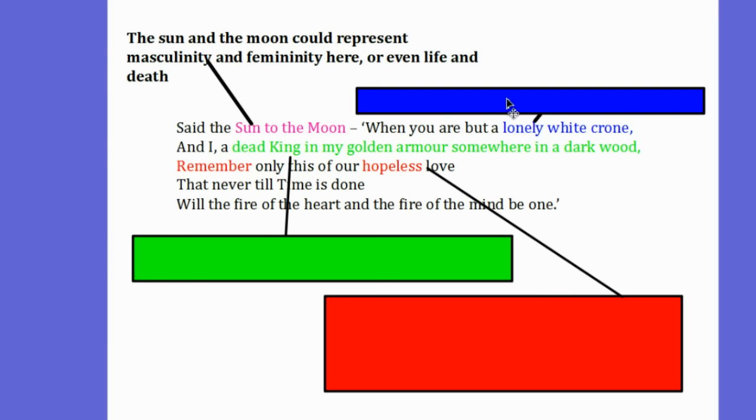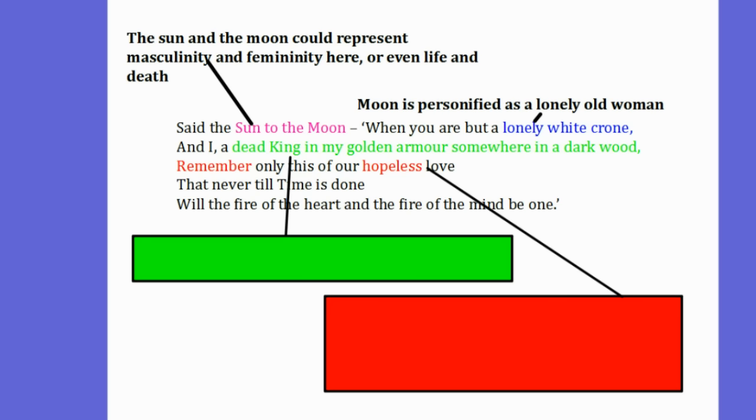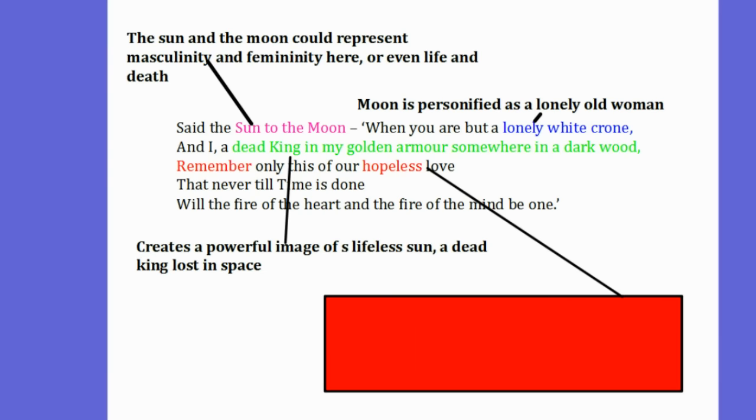This phrase here, a lonely white crone, the moon is personified as a lonely old woman. This phrase here, a dead king in my golden armour, somewhere in a dark wood, is interesting. It creates a powerful image of a lifeless sun, a dead king lost in space.